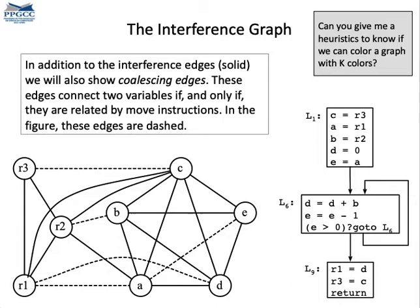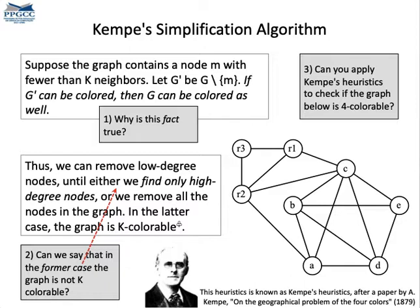So we need to find a valid coloring of the graph. A coloring is valid if two vertices linked by a solid edge get different colors. To find this coloring, the most well-known heuristic is due to Alfred John Camp. Camp provides a way to sort the nodes of the graph so that we can color these nodes in the order given by his heuristics.